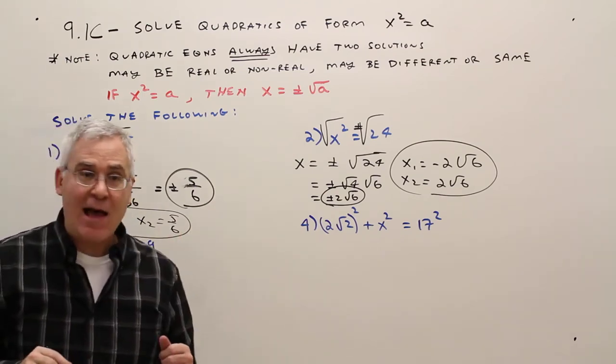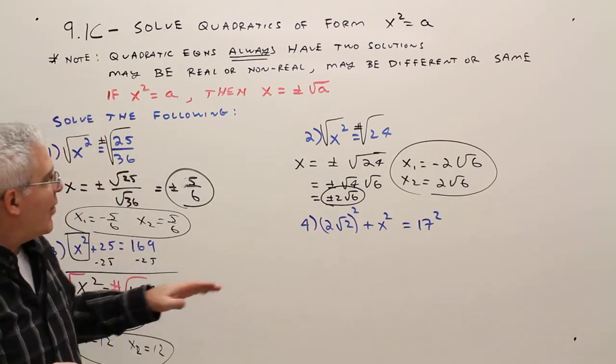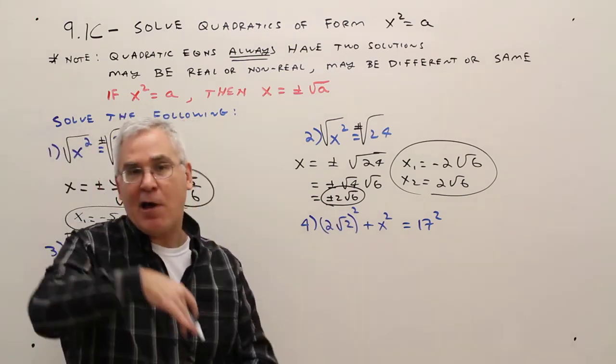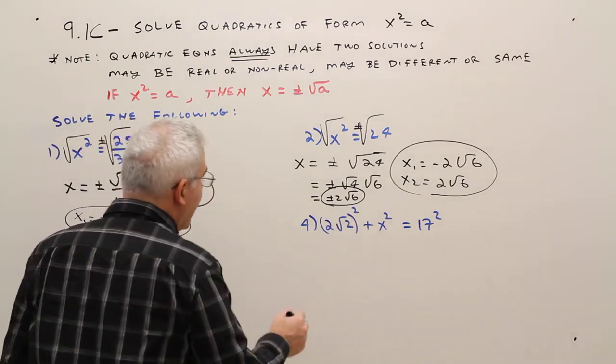Finally, example 4. What I've got to do is clean this up, isolate the X squared, clean this up, and then take the problem home. So let's do it.